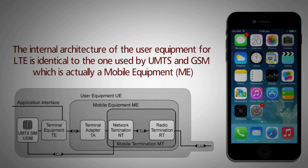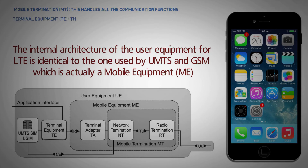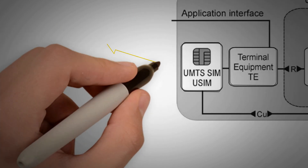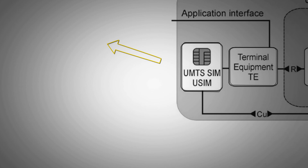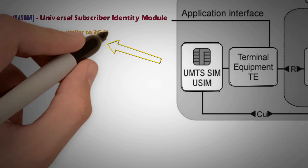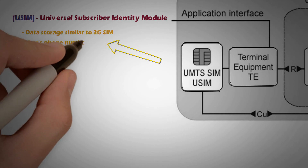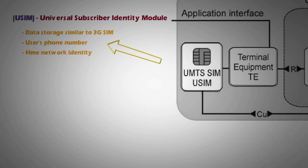The mobile equipment comprises the following important modules: Mobile Termination, which handles all communication functions; Terminal Equipment, which terminates the data streams; and the Universal Integrated Circuit Card, also known as the SIM card. The mobile termination and terminal equipment basically constitute the antenna. In LTE, the SIM card can run an application known as the Universal Subscriber Identity Module, or USIM. A USIM stores user-specific data very similar to a 3G SIM card, keeping information about the user's phone number, home network identity, and security keys.